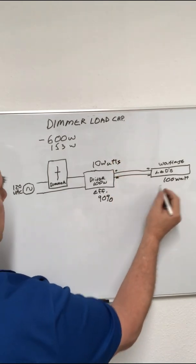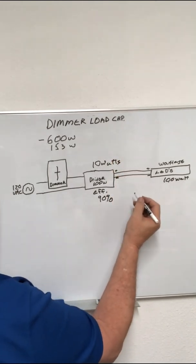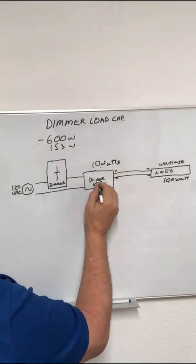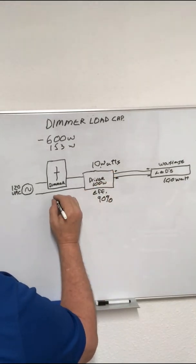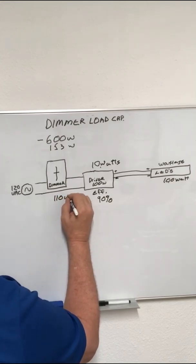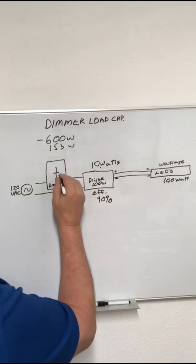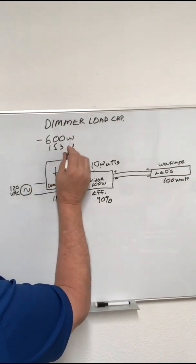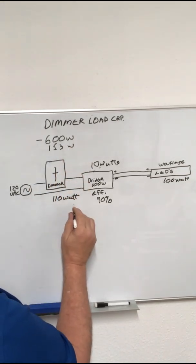So, what you do is you would add the 100 watts from the LEDs and the 10 watts for the driver being consumed by the driver, which gives you 110 watts felt by the dimmer. Now, you see that we have a large capacity here, so we're not even close.